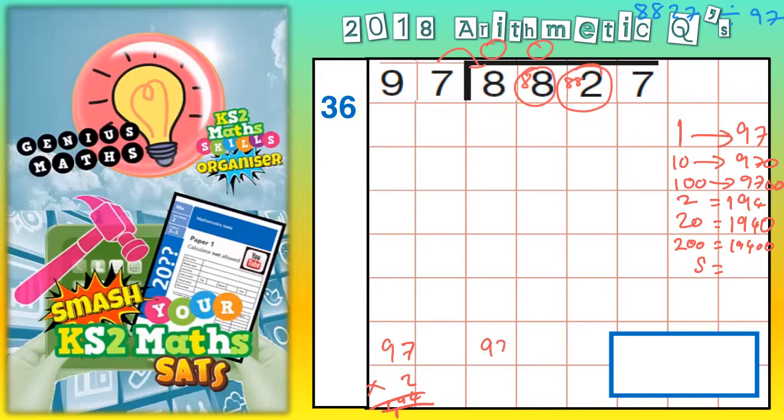Well, if we need a half of 970, half of 900 is 450. Half of 70 is 35. Put the two together and you get 485. So a chunk of 5 ninety-sevens would be 485.